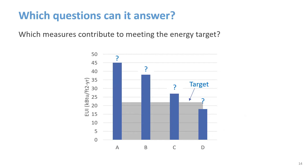Another question: which measures contribute to meeting the energy target? Success in meeting an aggressive target often requires a package of measures. A set of models with incremental changes can show how much each change contributes to total savings. These measures could be things like insulation or window shading, efficient lighting, or HVAC system features.